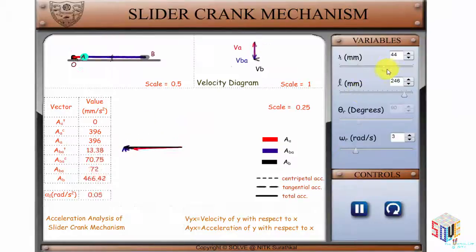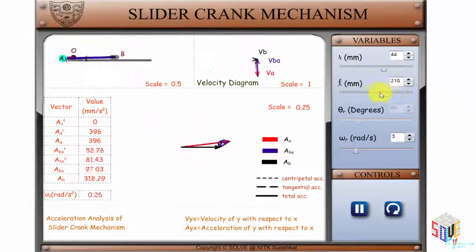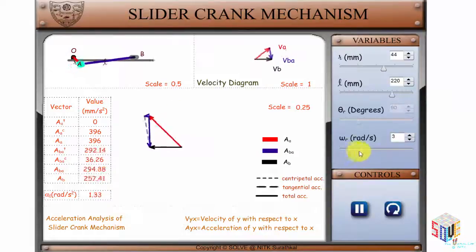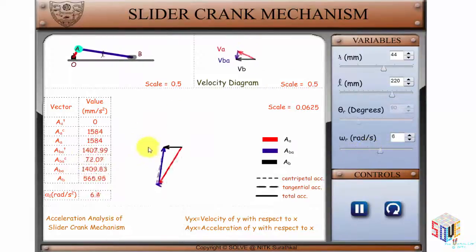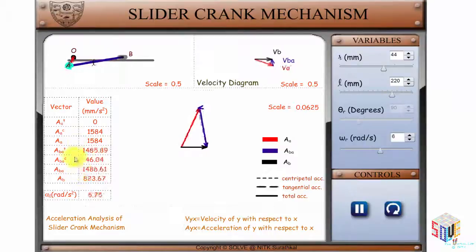By moving the slider, you can vary the radius, length, and angular velocity of the crank. Corresponding changes can be seen in this animation and the table.